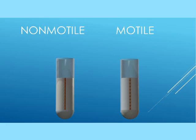In contrast, non-motile bacteria will only be able to grow in the stab region. So bacteria which are able to spread throughout the agar would test positive for the motility test.